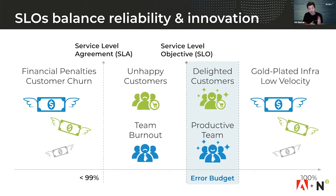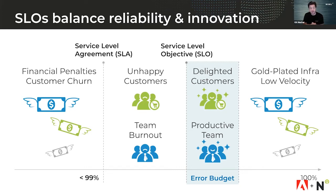The gap between the SLO and 100% is referred to as an error budget. We call it a budget because you can spend it on changes that add value to customers. If you say I want a three nines SLO — 99.9% — what you're really saying is that 0.1% of error can be safely ignored. And this is the power of SLOs in terms of trying to manage reliability.